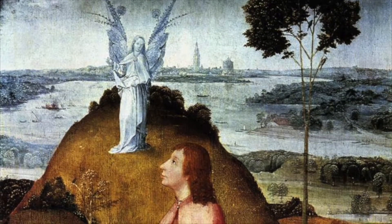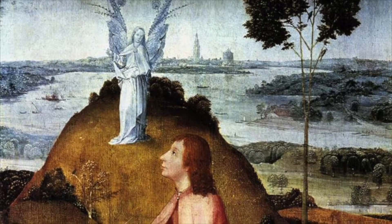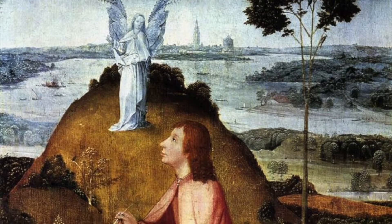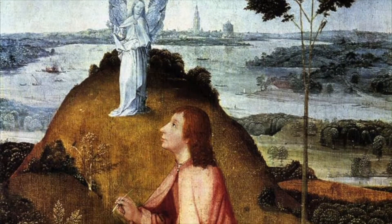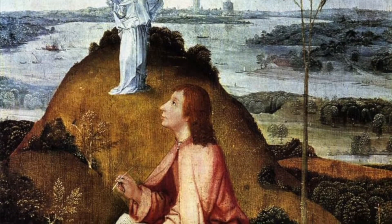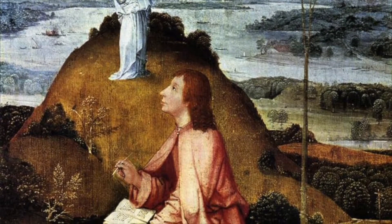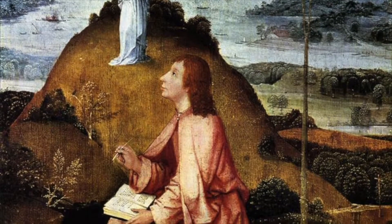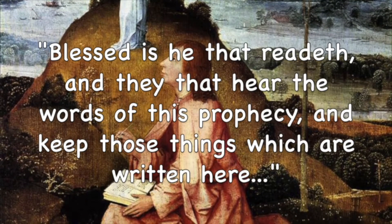The apostle John was commanded to show the vision to the servants of Jesus Christ. The servants, in turn, were to see the vision through its visual symbols based upon the planetary archetypes. But first, they had to hear the words of the prophecy.